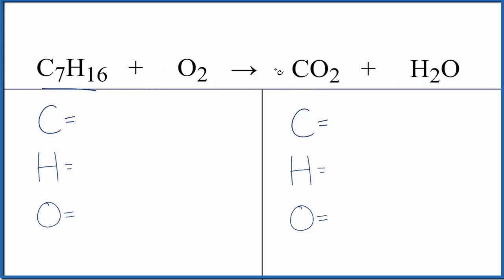Let's balance the equation. We have seven carbons, 16 hydrogens, and two oxygen atoms. On the product side, one carbon, two hydrogens, and two oxygen atoms. But don't forget this one over here in water. That's really important. So we actually have three oxygen atoms.